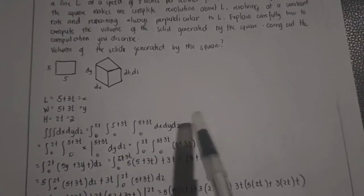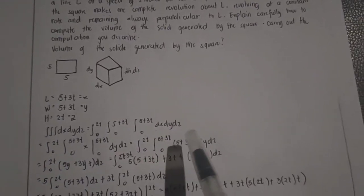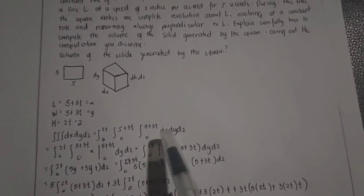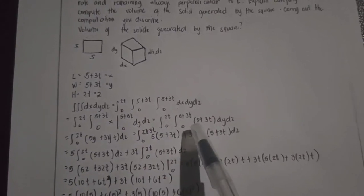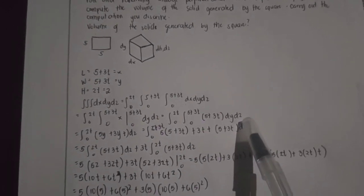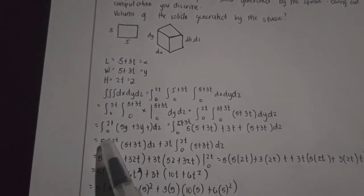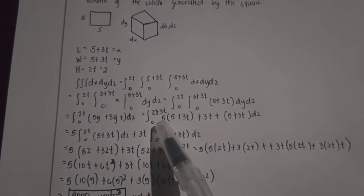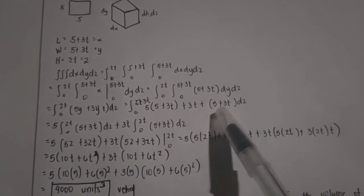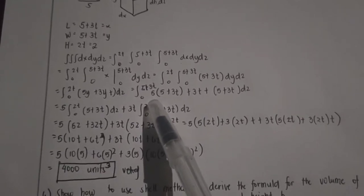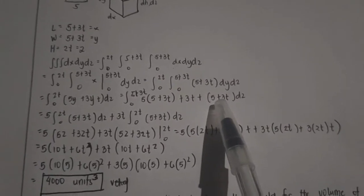Since we're going to use the triple integral, the equation would look like this. The first thing we're going to integrate is with respect to x, so we'll have x evaluated from 0 to 5 plus 3t, giving us 5 plus 3t, times dy dz. Then we integrate 5y plus 3yt with respect to dy from 0 to 2t, giving 5 times the quantity (5 plus 3t) dy from 0 to 5 plus 3t.